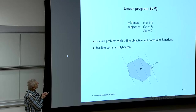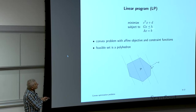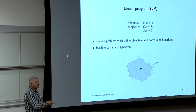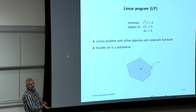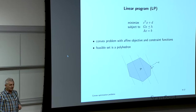An LP minimizes an affine function subject to affine inequality constraints and an equality constraint. Another way to say it: minimize a linear function over a polyhedron. The constant D doesn't matter — removing it gives an equivalent problem. The modern history of linear programming starts around the 1940s, though Fourier wrote about it earlier.